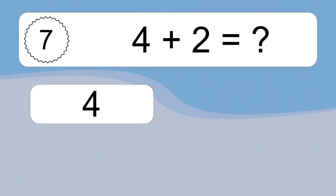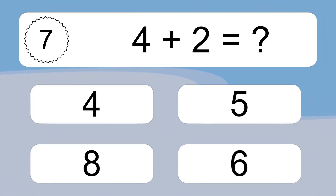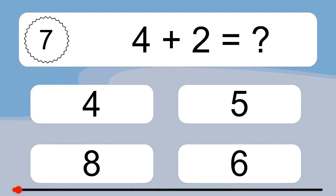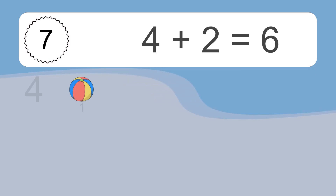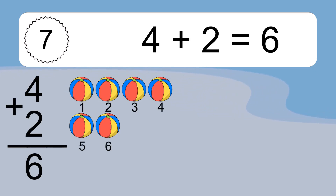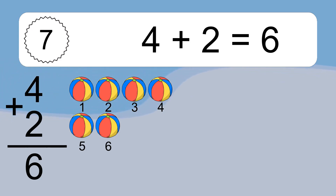4 plus 2 equals what? 4 plus 2 equals 6. Let's count it. 1, 2, 3, 4, 5, 6.